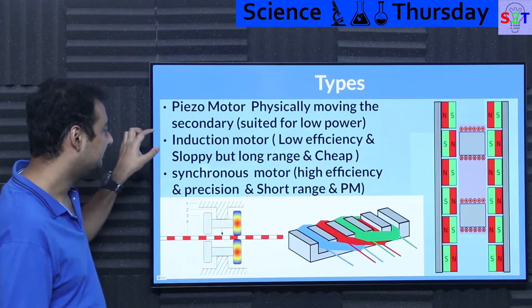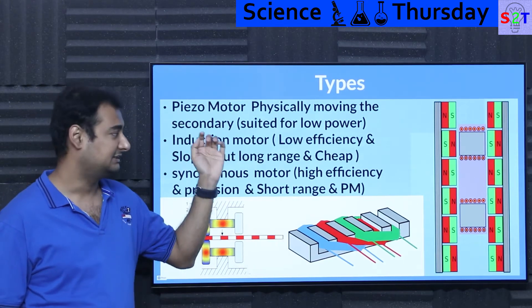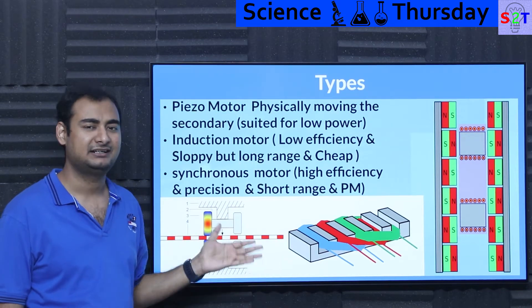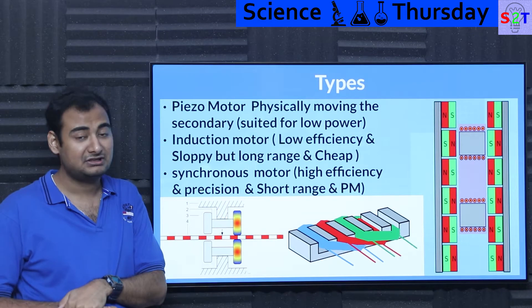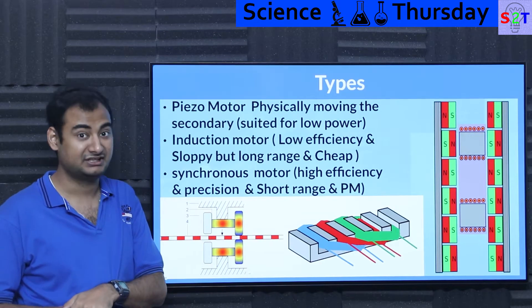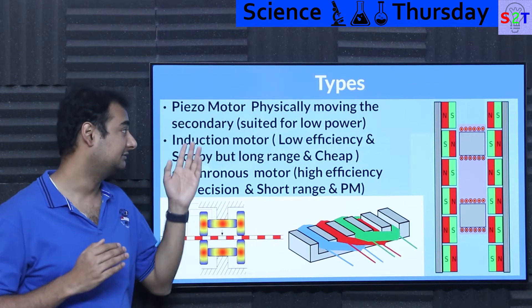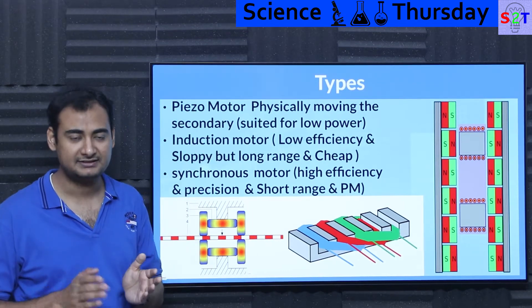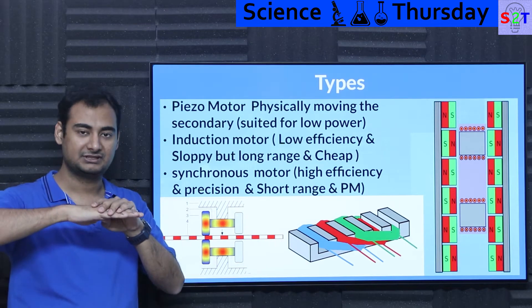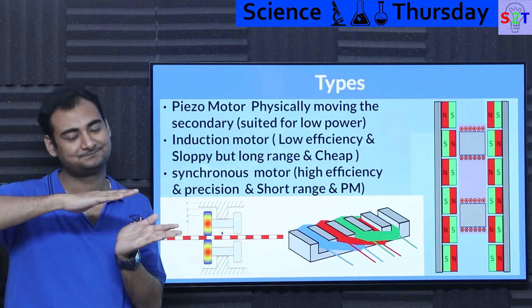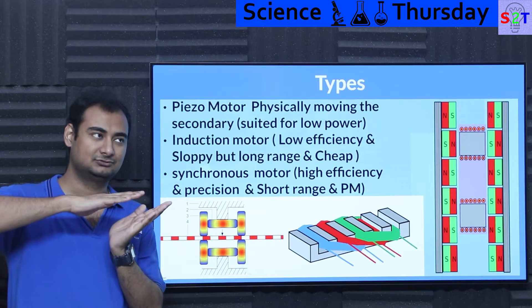Then we come to the linear induction motor. The biggest problem is that it has low efficiency. Now, induction motors are awesome — if you do it properly you can achieve almost 90 or even 95 percent efficiency. Why does the linear version have low efficiency? Well, generally wherever it is used — for example, trains — the primary is on the bogey, and the track carries the secondary.